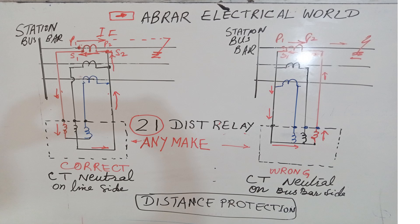The ANSI number is 21. Any make means it could be Siemens, GE, ACL, ABB, or any relay. The relay has three elements. If current enters into the element, the distance relay sees it as a forward direction — the direction in which the line is. So the current enters the element, and then returns. This relay will act correctly and look into zone 1 or zone 2, and give a trip command to the circuit breaker. This is the correct diagram.